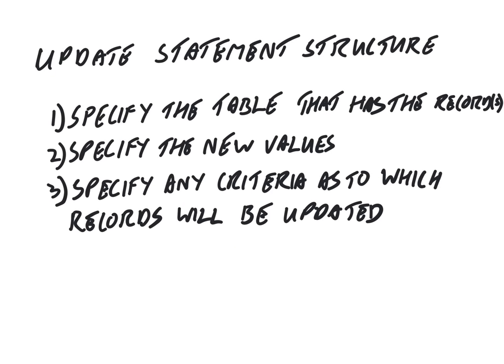If you look at the structure of an update statement, it has a few parts. The first part is you specify the table that has got the records. The second is you specify the new values that are going to be put in. The third is you specify any criteria for which records to update — for example, if you only want to update a course that runs on a particular day or with a particular name, you don't want to update every single record in the database.